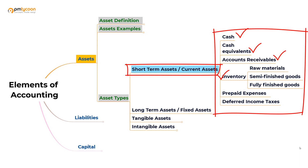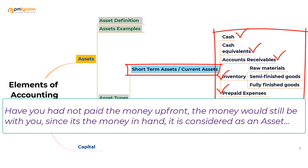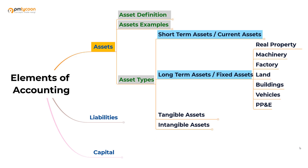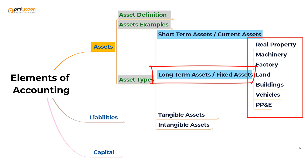An important point: any expenses paid upfront, like prepaid rents or prepaid expenses, are considered assets. The reason is that if we had not paid them upfront, that amount would have been counted as cash in hand. Anything that is prepaid is considered a current asset because you also don't have to pay going forward since you've already made the payment. Fixed assets, the other name for long-term assets, are those used in business operations with a useful span of more than a year. Examples include property, plant, and equipment, often abbreviated as PP&E.